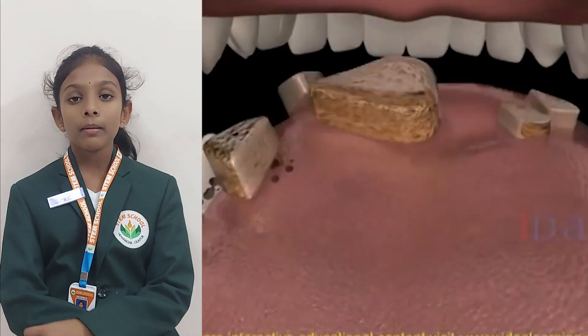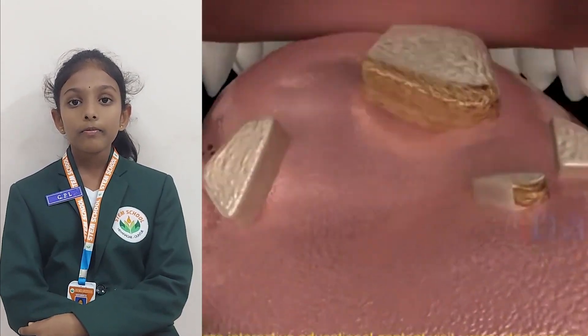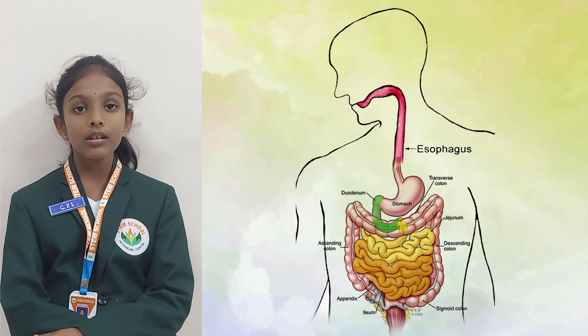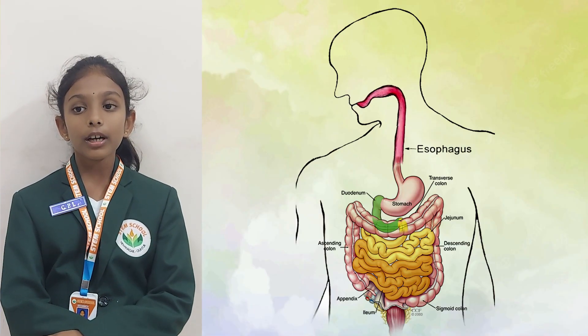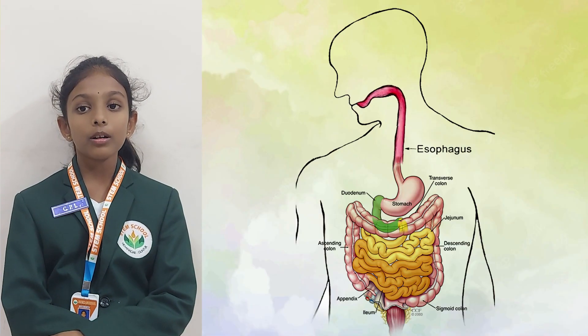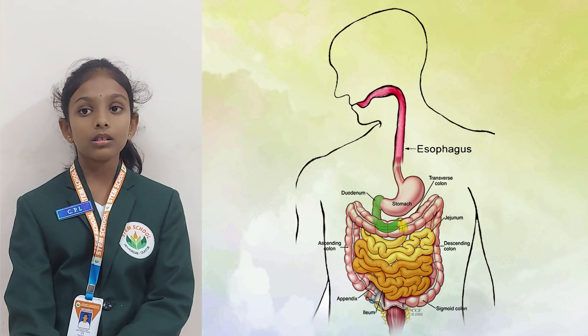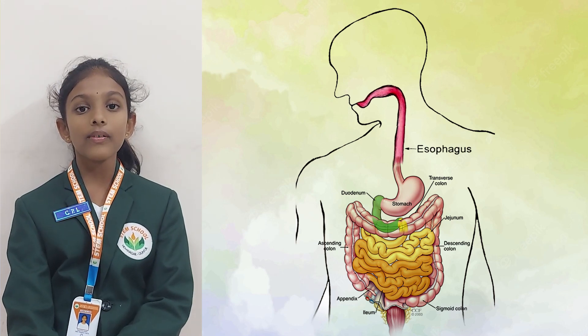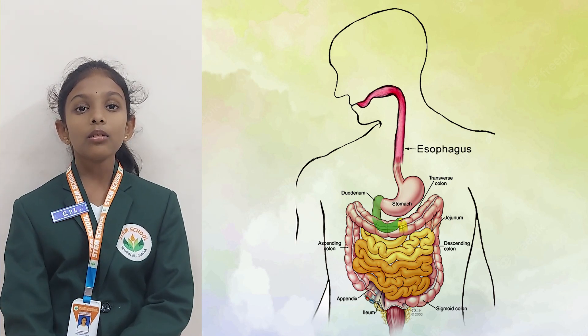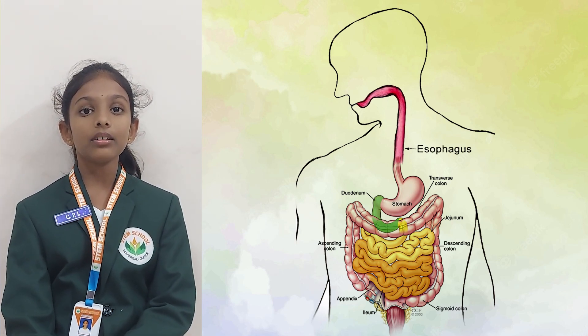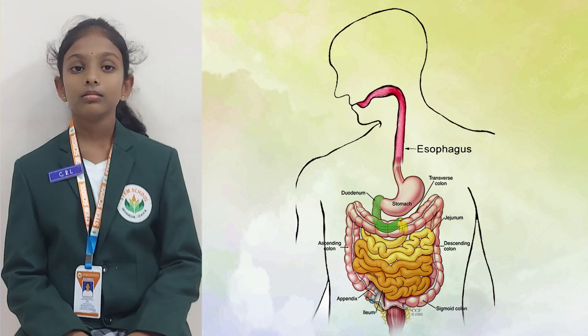Foodpipe. Our tongue pushes down the moistened food into a tube called the foodpipe. The foodpipe is also called the esophagus. Through the foodpipe, the food goes into the stomach.